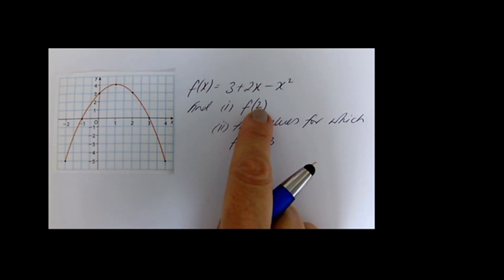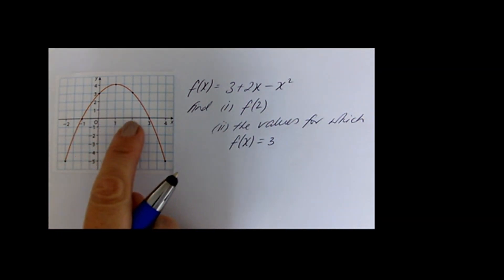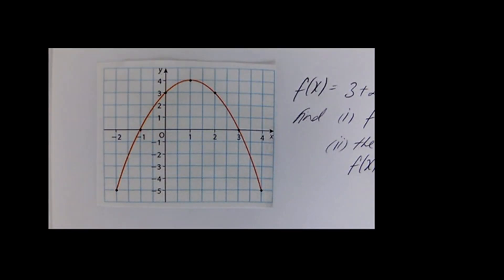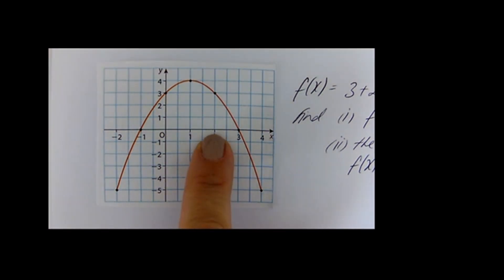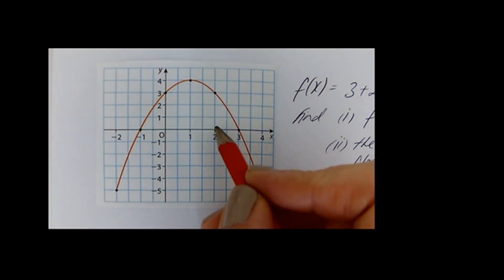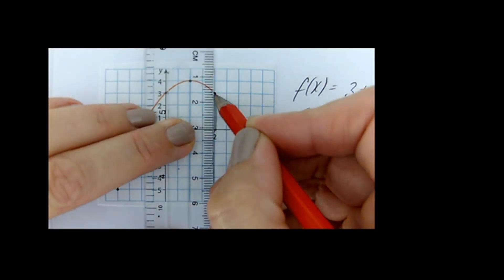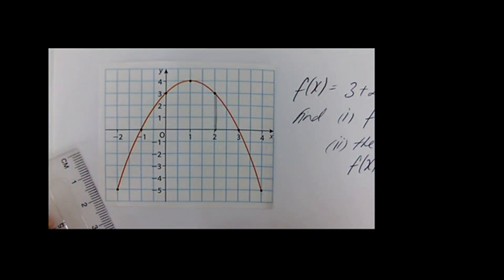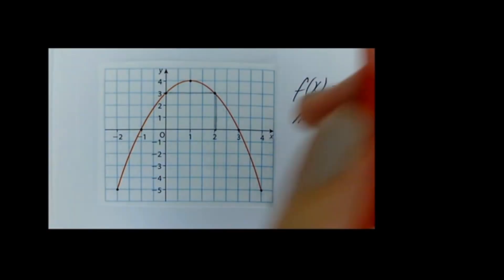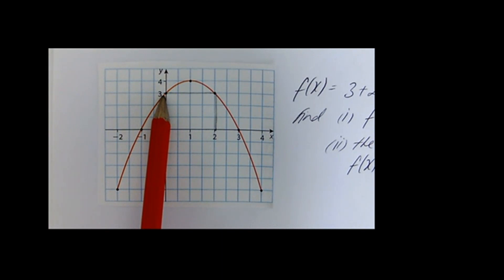When we have f of 2, the 2 is replacing the x. That means we're going to go to 2 on the x axis. So there's 2 on the x axis, and you draw a vertical line to meet the curve. When I draw a vertical line up to meet the curve, that's where I touch it. As soon as you get the curve, you read off the y, and we're getting the value 3. So that's my first answer.